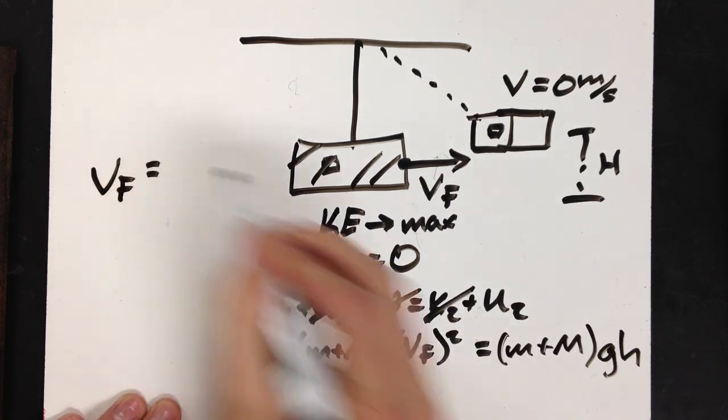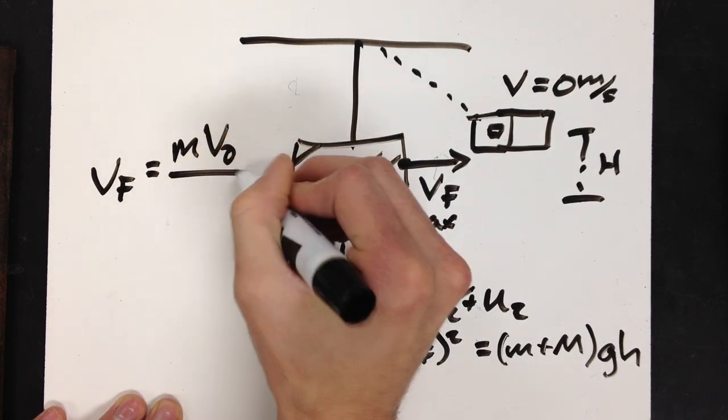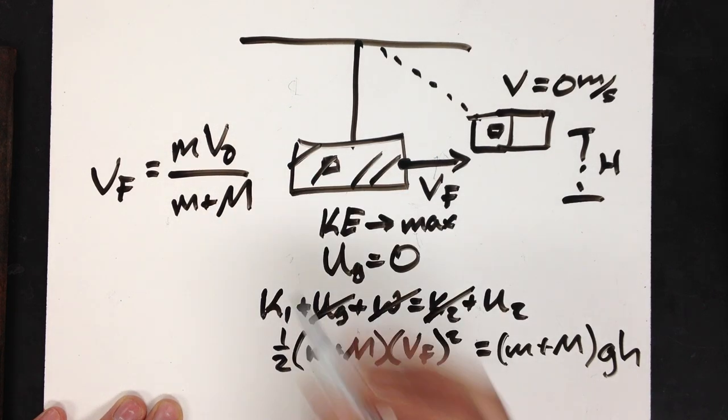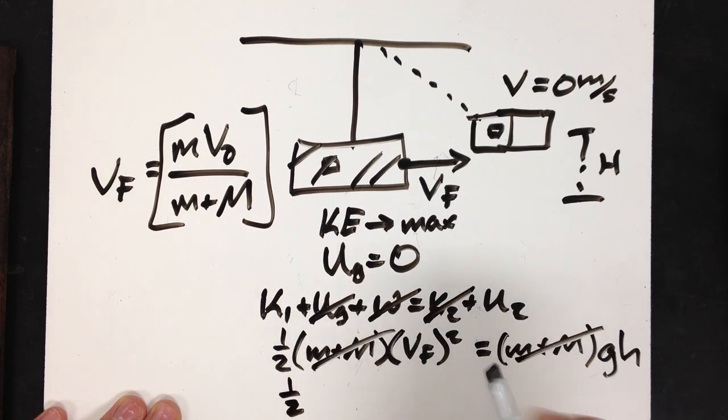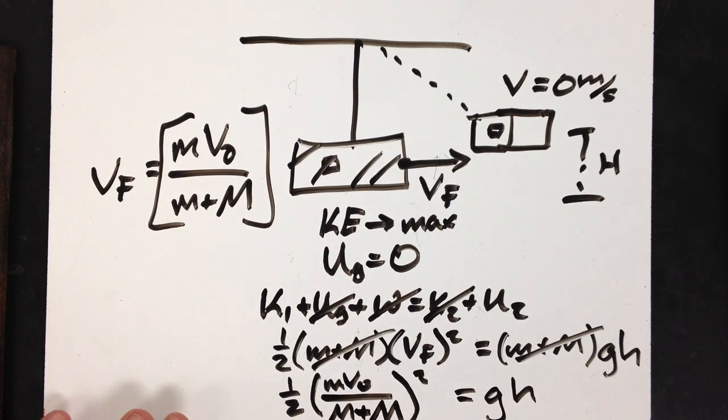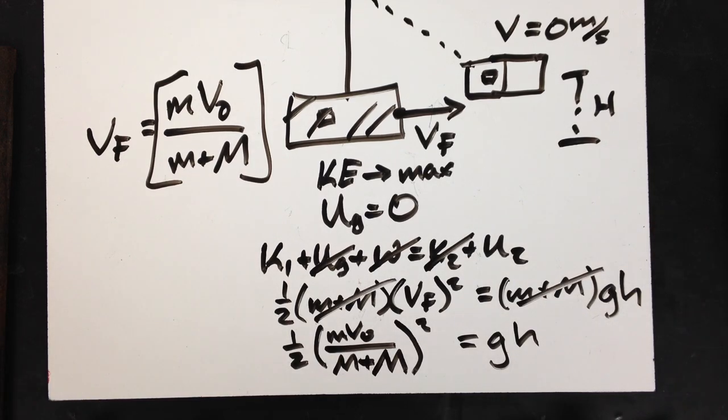Now, v final is that velocity post-collision, which we got as m, little m, v0, divided by little m plus big M. So, I'm going to take this and substitute it in. So, I've got one half, look at my mass on both sides, cancel it. So, I've got mv0 divided by little m plus big M squared equals gh. Now, I could solve for height by just dividing both sides by g.